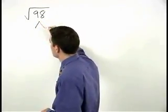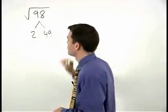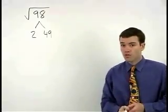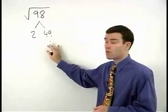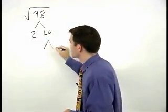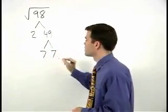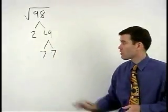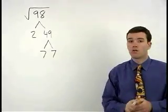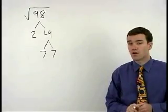98 is 2 times 49 and if you know your perfect squares you'll recognize 49 as 7 times 7. What we're looking for in our factor tree are pairs of factors that are the same.